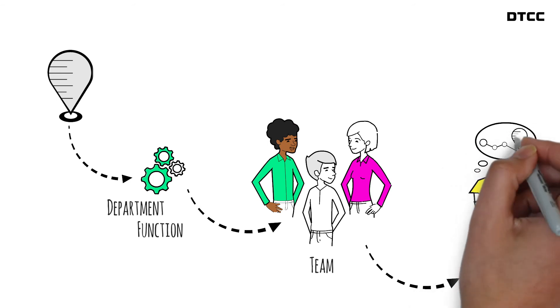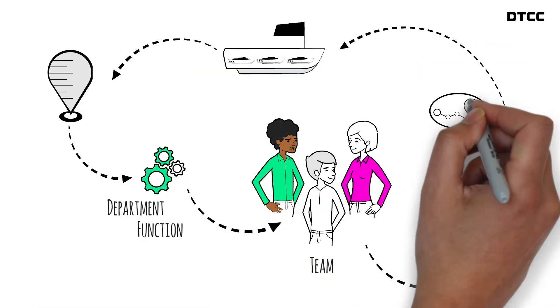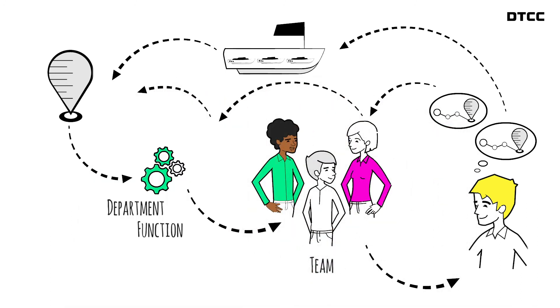Like most agile practices, this framework is not rigid. So depending on your role, it might make sense for you to have OKRs that align to a tribe as well as your function, and that's OK.